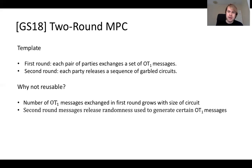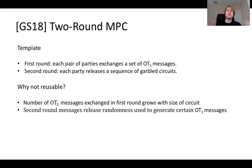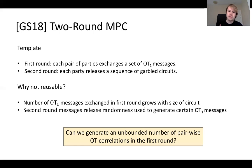The issue is that the number of OT1 messages exchanged in the first round grows with the size of the circuit to be computed in the second round. For each gate in the circuit, the parties need to exchange a number of OT1 messages. These OT1 messages can't be reused because the garbled circuits will release the randomness used to generate them, which would not be secure if you tried to reuse these OT1 messages multiple times.